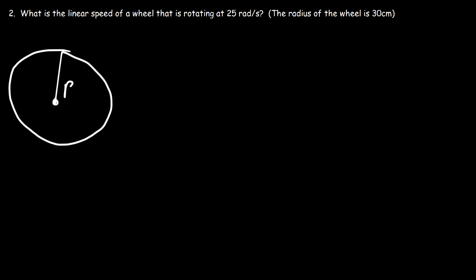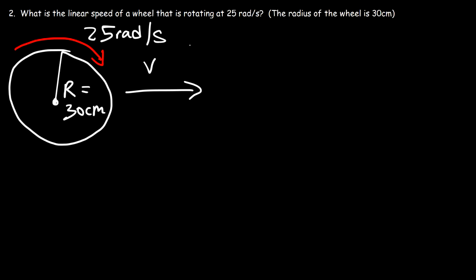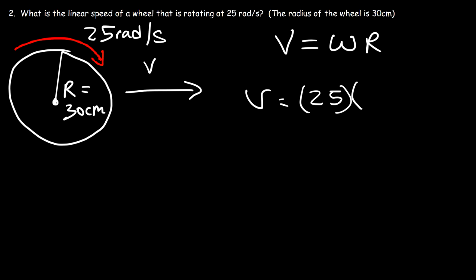Number 2: what is the linear speed of a wheel rotating at 25 radians per second, given the radius of the wheel is 30 centimeters? The equation we need is V equals omega times R. So it's 25 multiplied by the radius converted to meters: 30 centimeters divided by 100 is 0.30 meters. So 25 times 0.3 is 7.5. The linear speed is 7.5 meters per second.